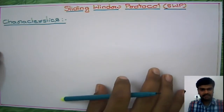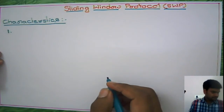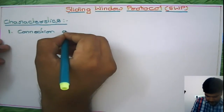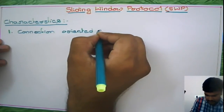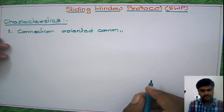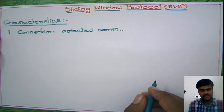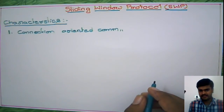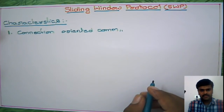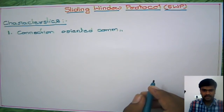The first characteristic of the sliding window protocol is that it is used in connection-oriented communication. We said that the fast sender and slow receiver problem arises when you have a connection. If you want to send data, you need to establish the connection first, then on that connection you send the data. Once the connection is established, the sender sends data and the receiver receives, so obviously the fast sender and slow receiver problem may arise — that's where we use SWP.